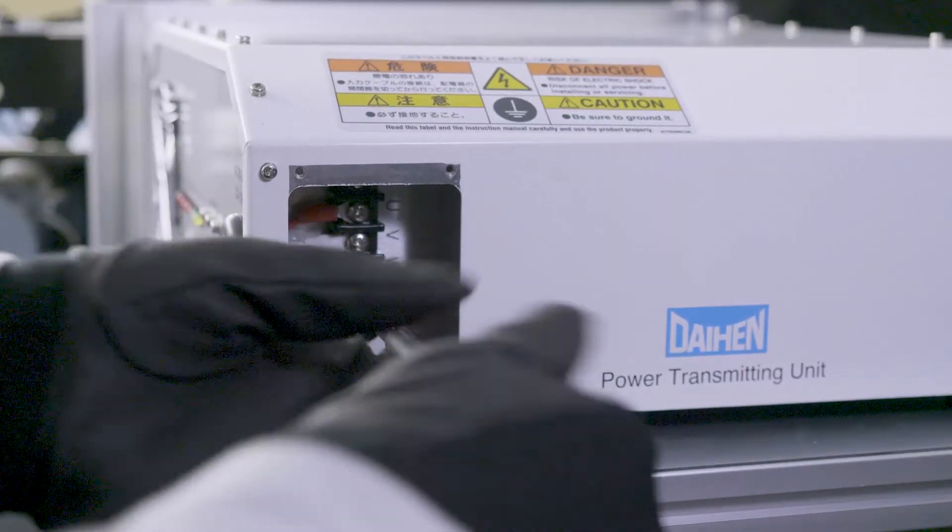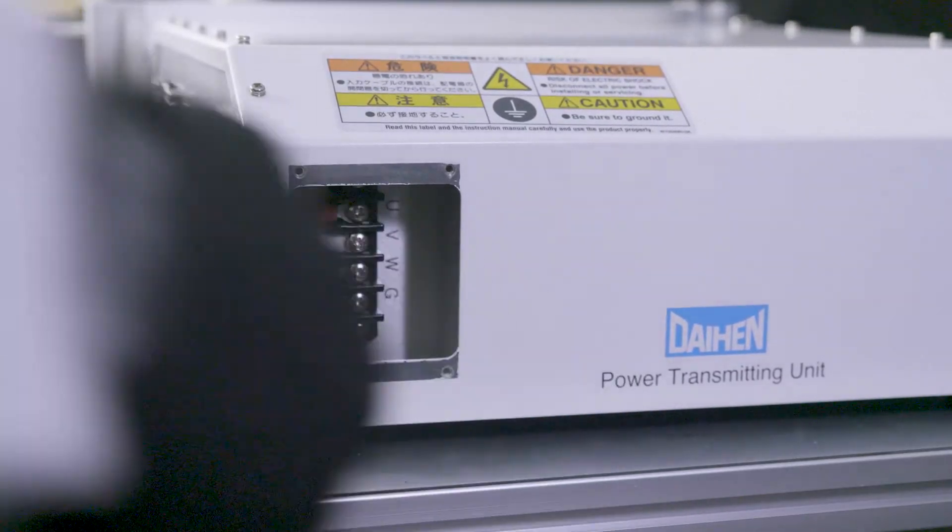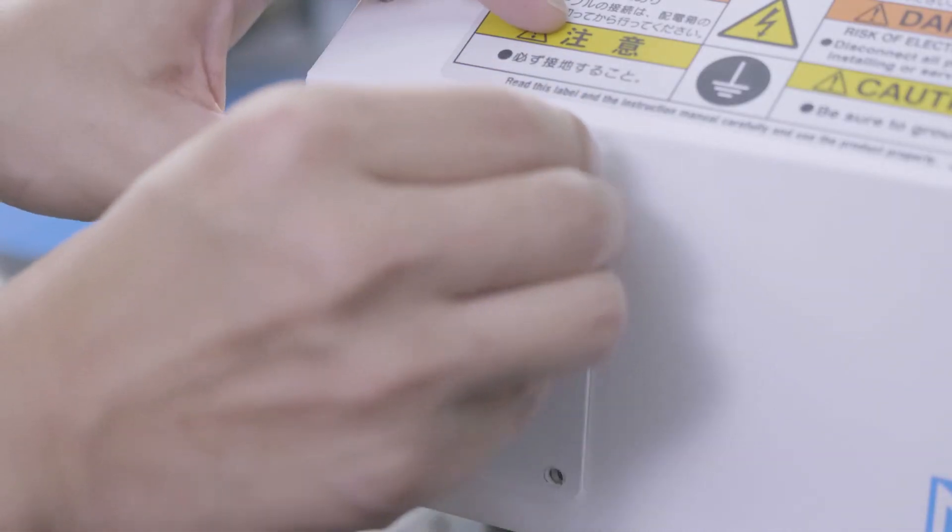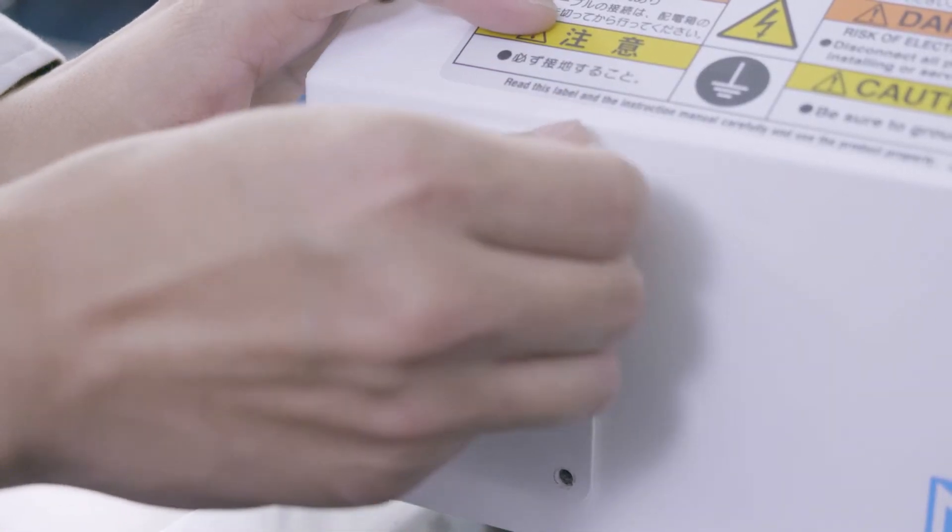Connect the input power cable and grounding conductor to the terminal block. Reattach the small panel on the side of the power transmitting unit.